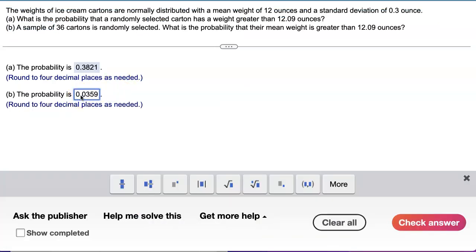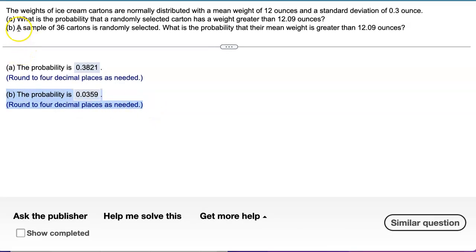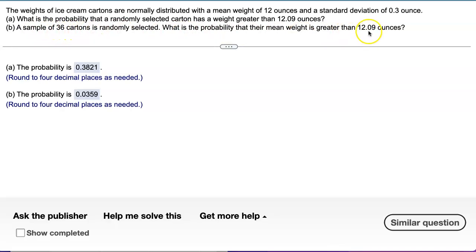I guess they're not asking for what is unusual, but if they ask, then we will say it would be considered very unusual to have a sample of 36 cartons and their average coming out to be heavier than 12.9 ounces.